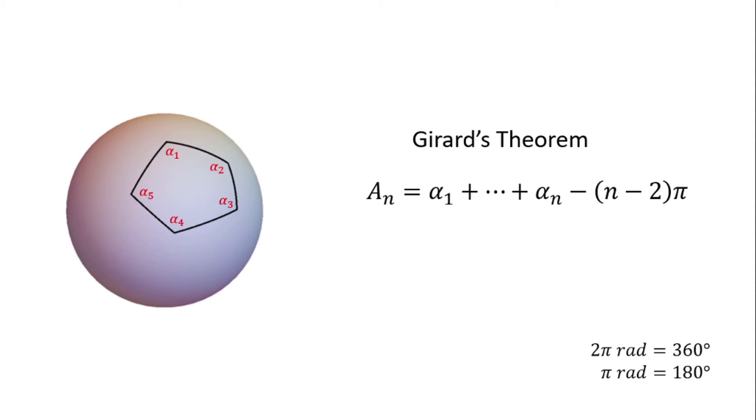Now using the distributive law, we get a good way of visualizing this theorem. Each vertex contributes its angle to the area, each edge negatively contributes its angle, minus pi, and the interior contributes to the full angle of 2 pi.